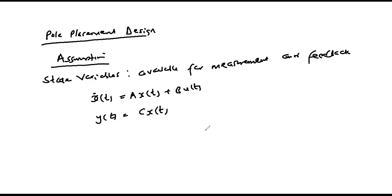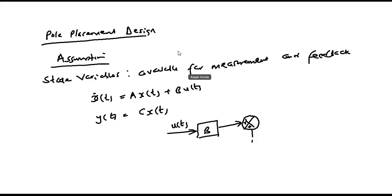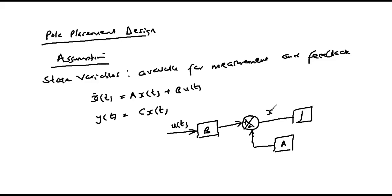From the state equation, we can represent the system in a block diagram as follows. We have our input passed through B, this is our u(t), then we have a summing point where we sum after feedback having passed through matrix A. Our x-dot(t) passes through an integrator to get our x(t).